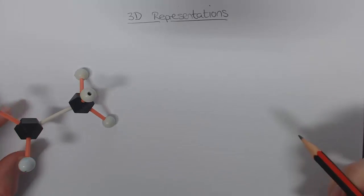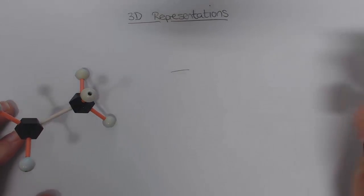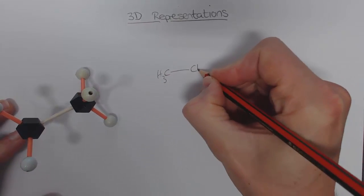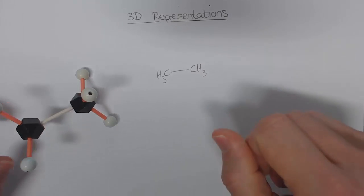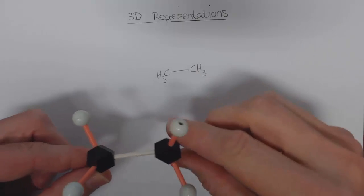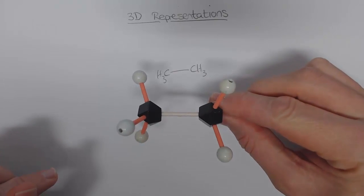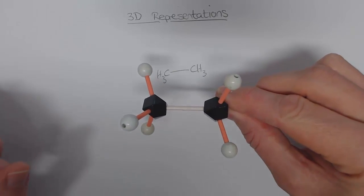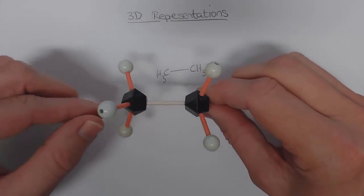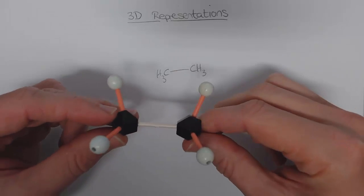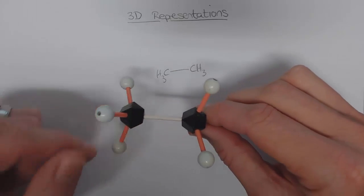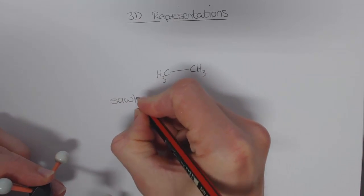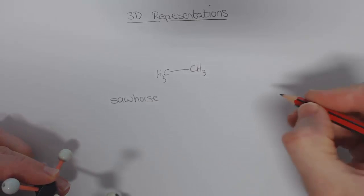When we draw something like this on a piece of paper, it looks very boring — just a single line, because at each end we've got the CH3 groups. But as you can see in three dimensions, it's a little more complicated. There are two types of conformational drawings we use to show the three-dimensional shape of a molecule. One is the sawhorse projection, and the other is a Newman projection.